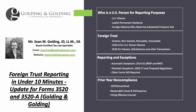So let's walk through the basics. First, who's a U.S. person for reporting purposes? Typically it's going to be three categories: U.S. citizen, lawful permanent resident, or a foreign national who meets the substantial presence test. The latter category typically includes or focuses on visa holders.